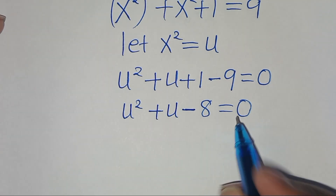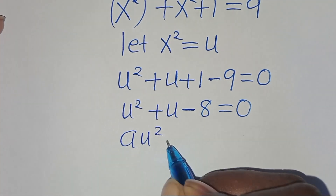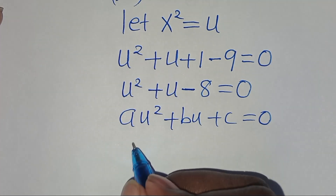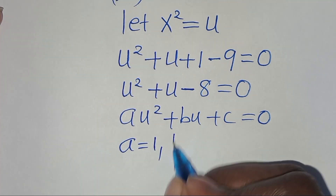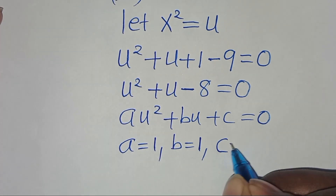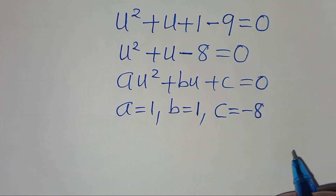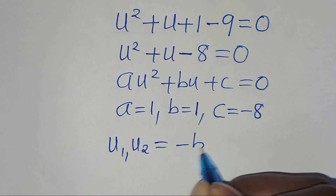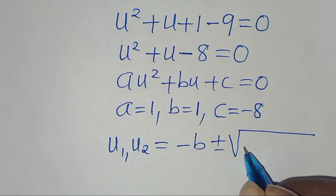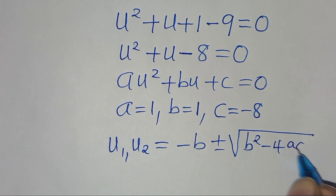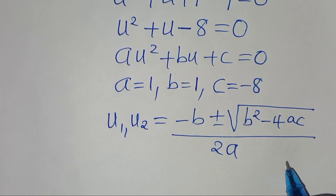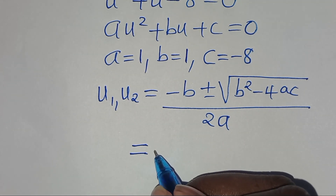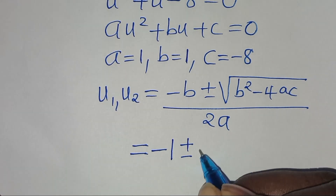So this is a quadratic equation of the form a u squared plus b u plus c, this is equal to 0. From this equation here, we have that a is equal to 1, b is equal to 1, and c is equal to minus 8. So we can solve for u1 and u2, which is equal to minus b plus or minus the square root of b squared minus 4ac, everything divided by 2 times a.